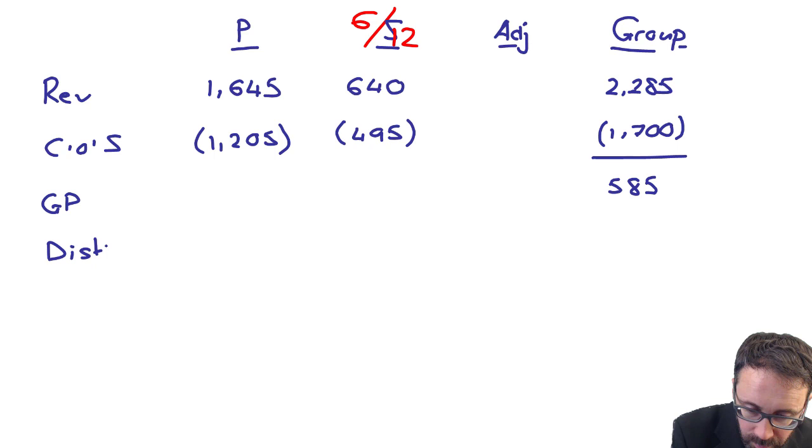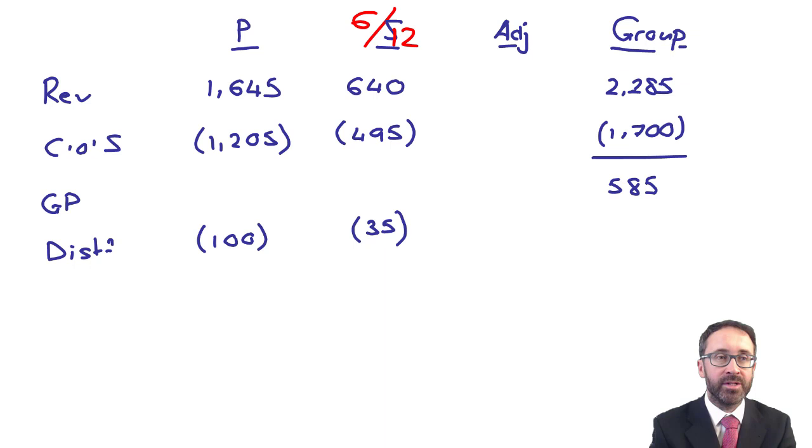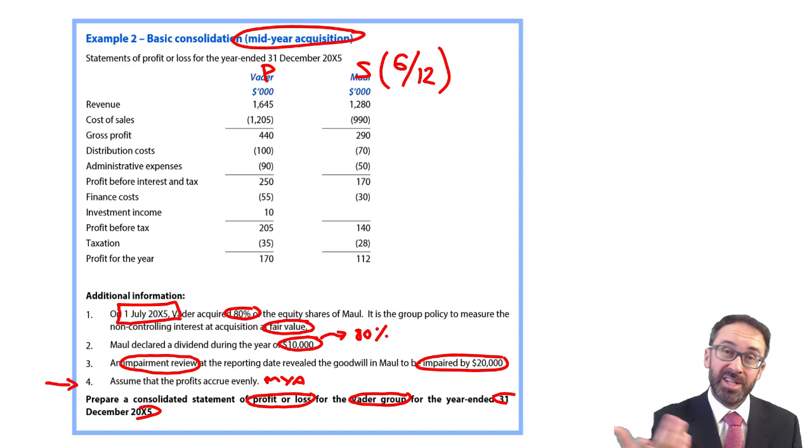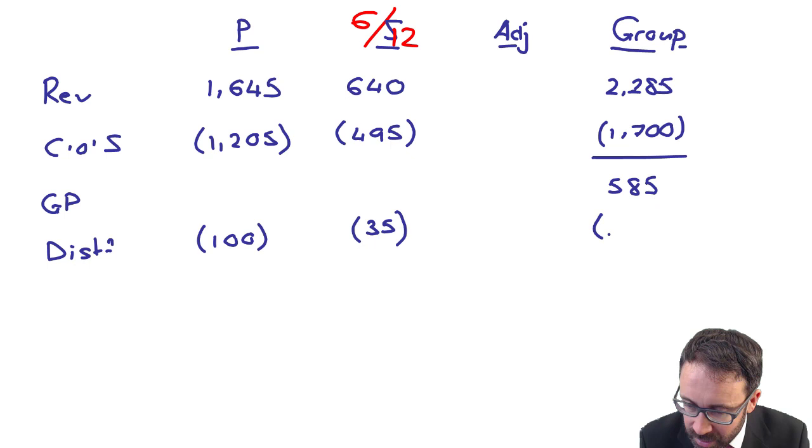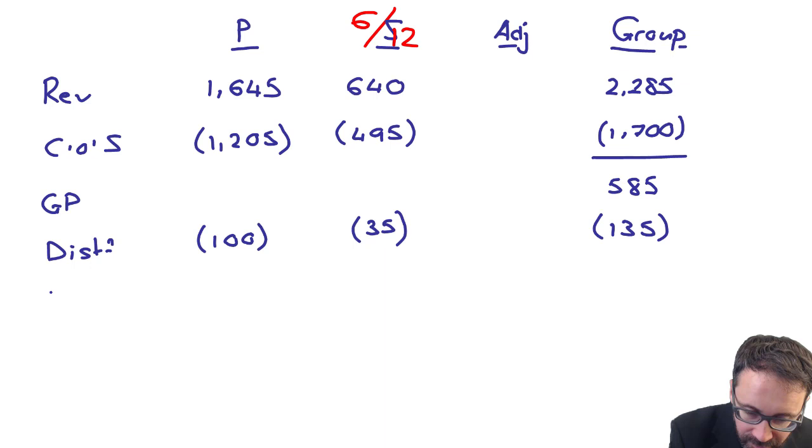My distribution costs. Of the parent, I think it's 100. Of the subsidiary, it's 70, which when prorated by six-twelfths is 35. Let's just go back, double-check. What have we got? 100, 70, and six-twelfths of 70. Half of 70 is your 35. So that gives me distribution of 135.